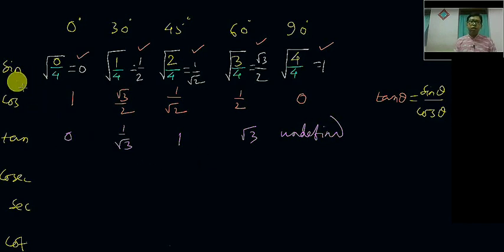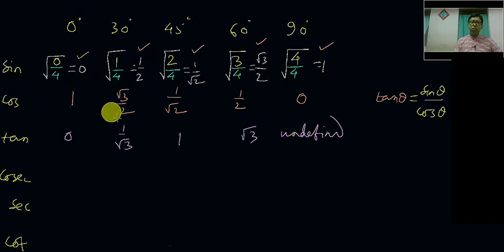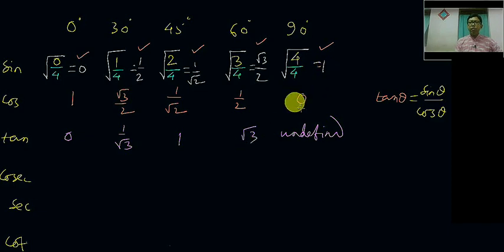So you have got three trigonometric functions with their corresponding angles. Sin values are 0, 1/2, 1/root 2, root 3/2, and 1. Just reverse the order for cos: 1, root 3/2, 1/root 2, 1/2, and 0. For tangent, simply divide sin by cos for each standard angle: 0 divided by 1 is 0; 1/2 divided by root 3/2 is 1/root 3; 1/root 2 divided by 1/root 2 is 1; root 3/2 divided by 1/2 is root 3; and 1 upon 0 is undefined.